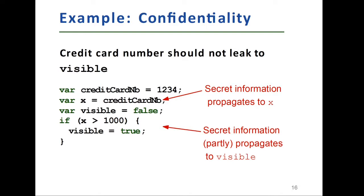Secret information here means credit card number. And on line four, this control flow or if control flow, the secret information partially propagates to visible. Therefore, when users access to visible, they can estimate or they can guess that credit card number is more than 1,000.